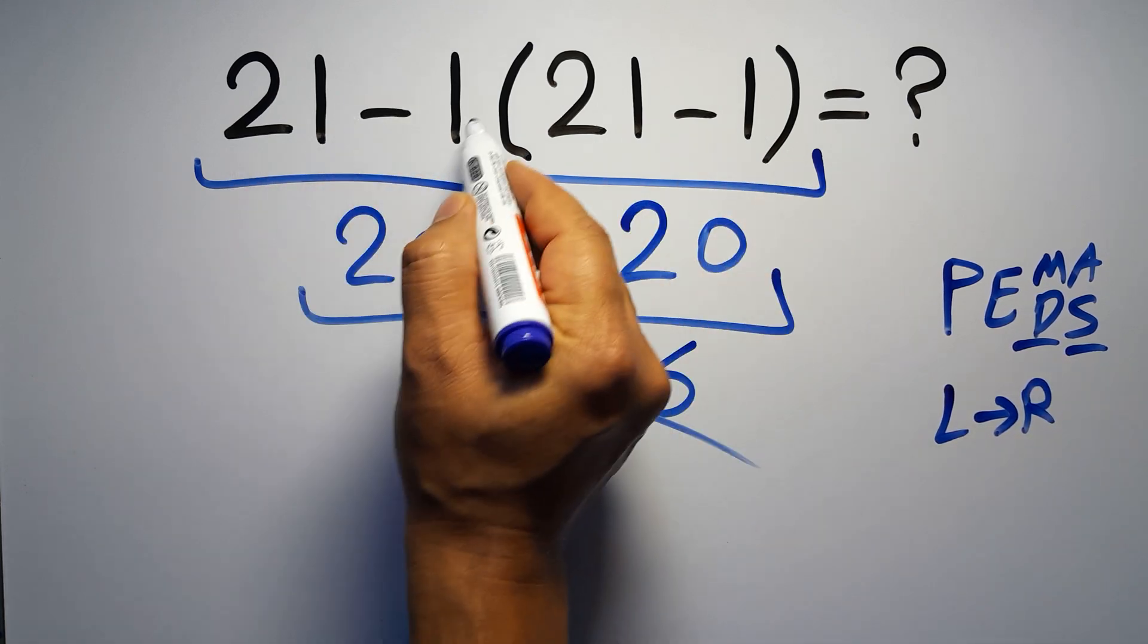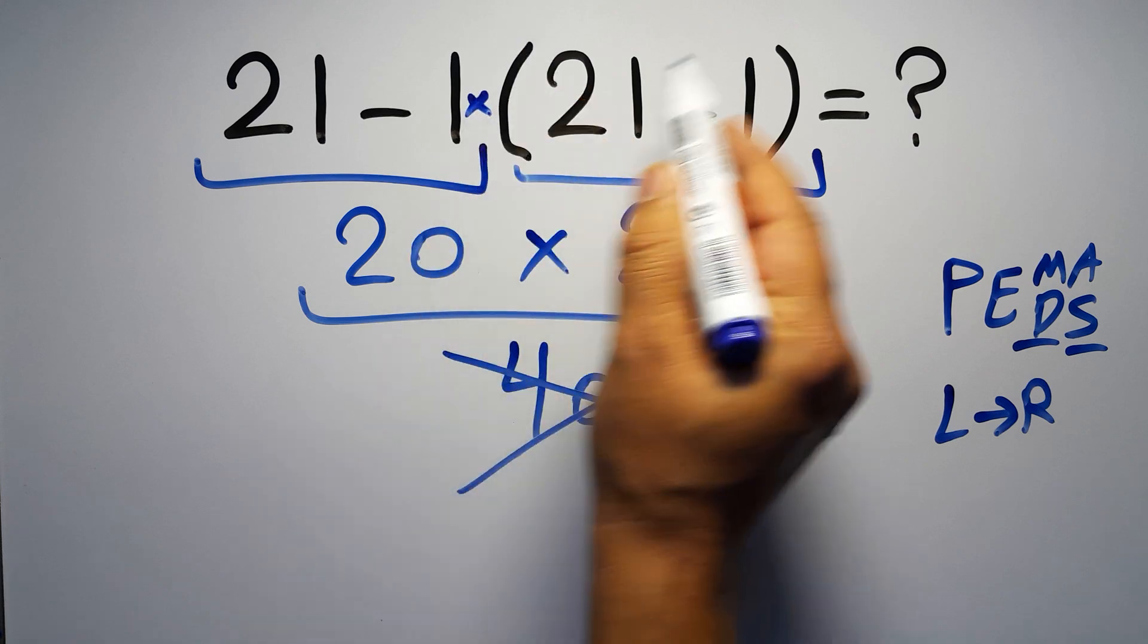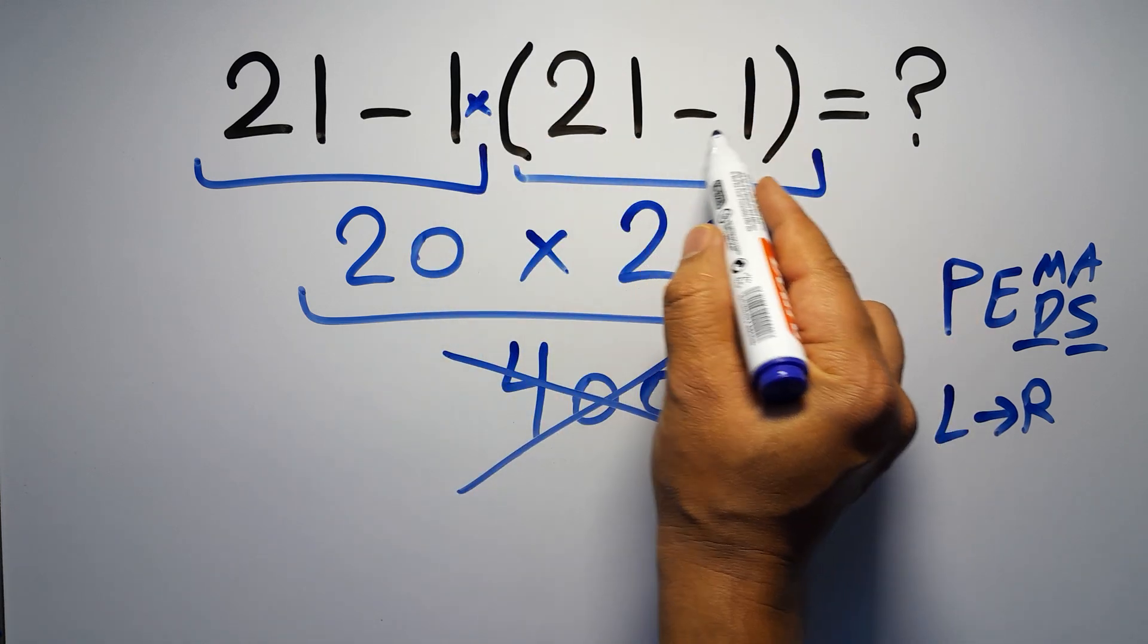In this expression we have one subtraction, one multiplication, and one parentheses. Inside this parentheses we have one subtraction,